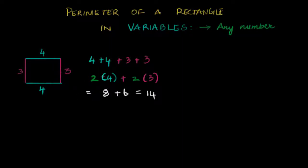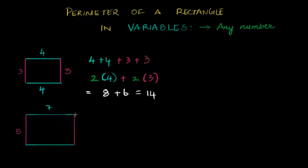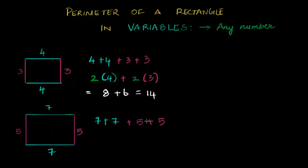I'll look at one more example, because when I see this I can see that I'm adding two times the length plus two times the breadth. Let me take one more rectangle and do it for this. I'm noticing I'm doing the same thing — I'm going to take seven plus seven this time, because it's seven over here, and five plus five. So two times the length plus two times the breadth. That's what I'm doing in all these cases.